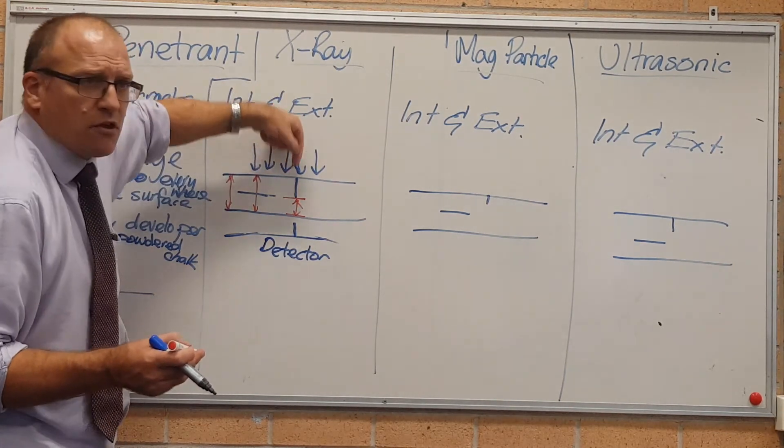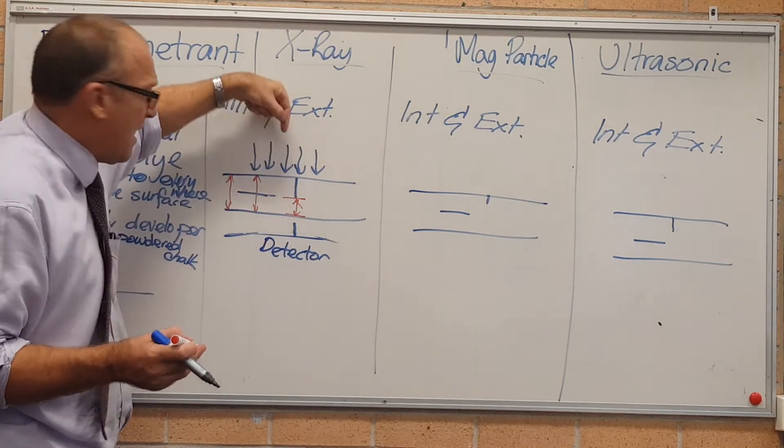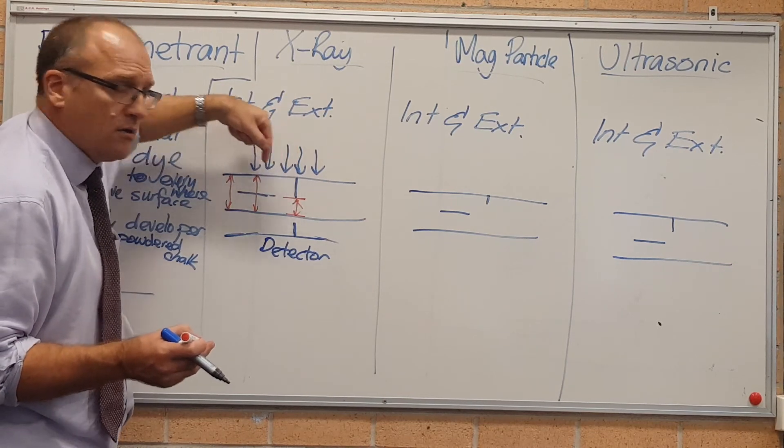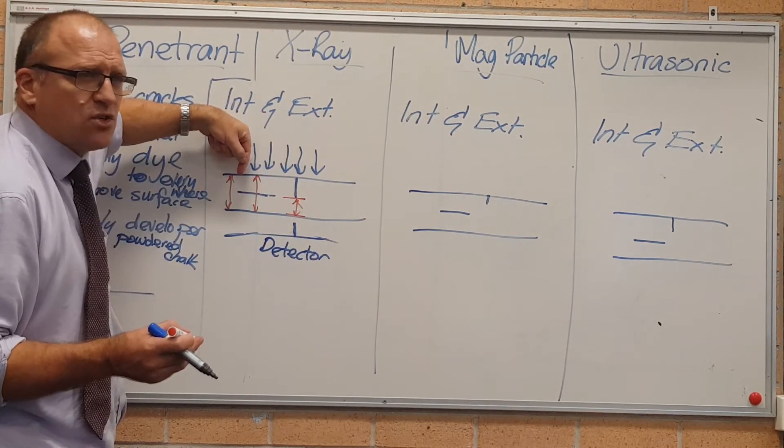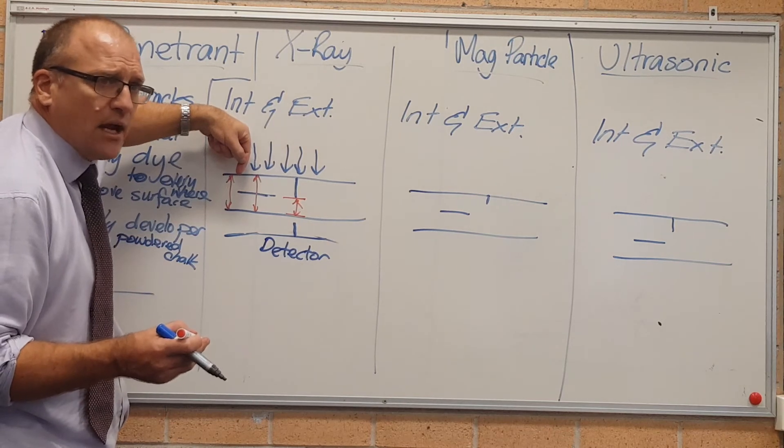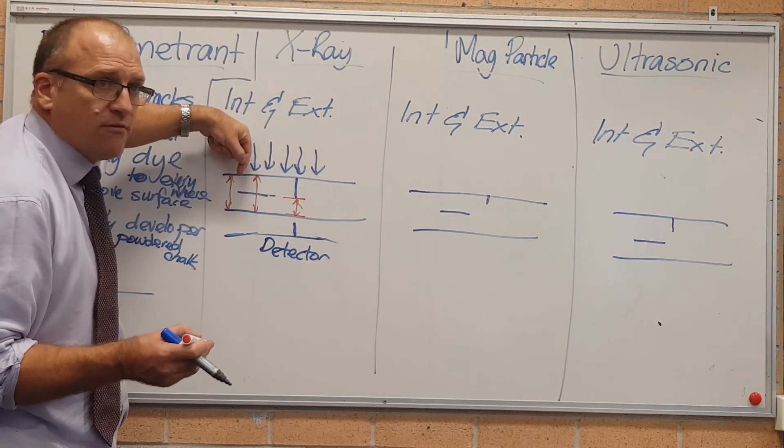So X-rays are really good if the crack's parallel to the path of the X-ray. Really horrible if it's 90 degrees. It'll just show as a tiny shadow, which is inconclusive.